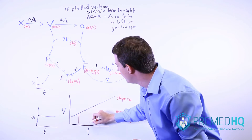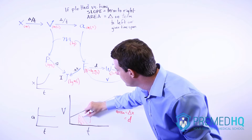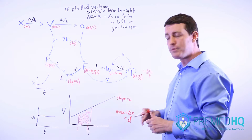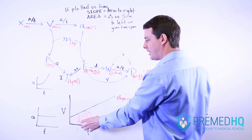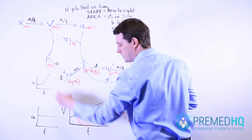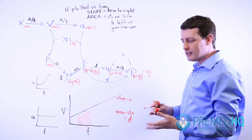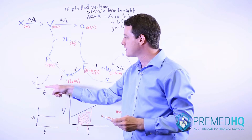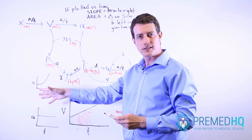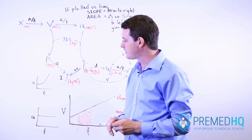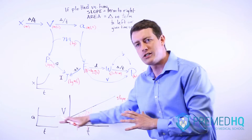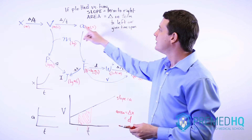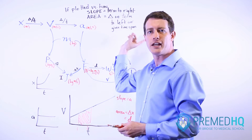The area under the curve tells you the total change in the term to its left. So the area under the velocity versus time graph tells you the change in position — the displacement experienced by the object. If you're looking at position versus time, the slope tells you instantaneous velocity, and for acceleration versus time, the area between that curve and the x-axis tells you the change in velocity over time.